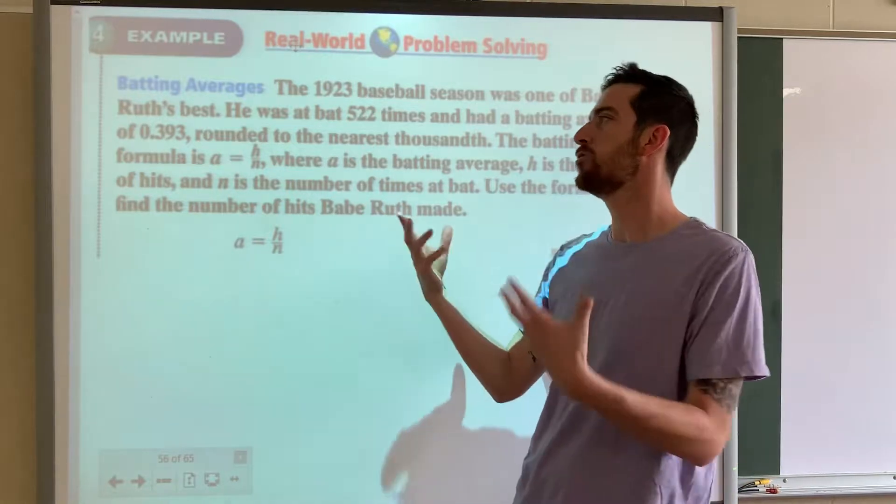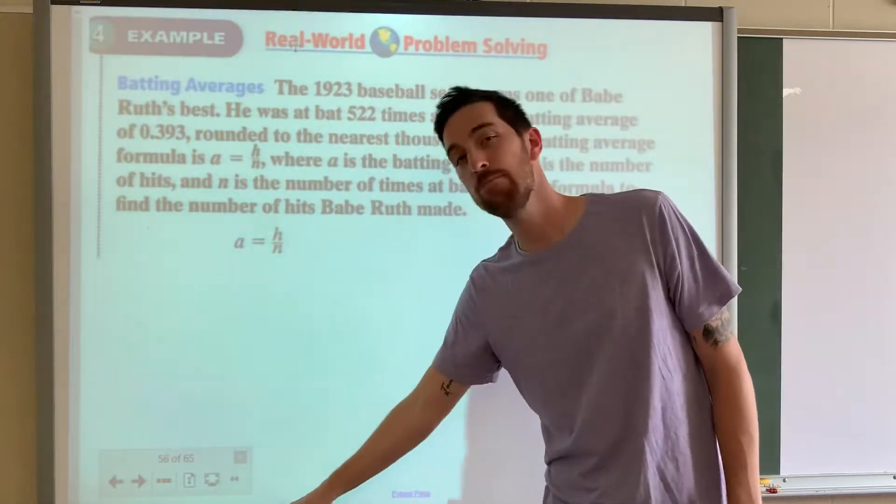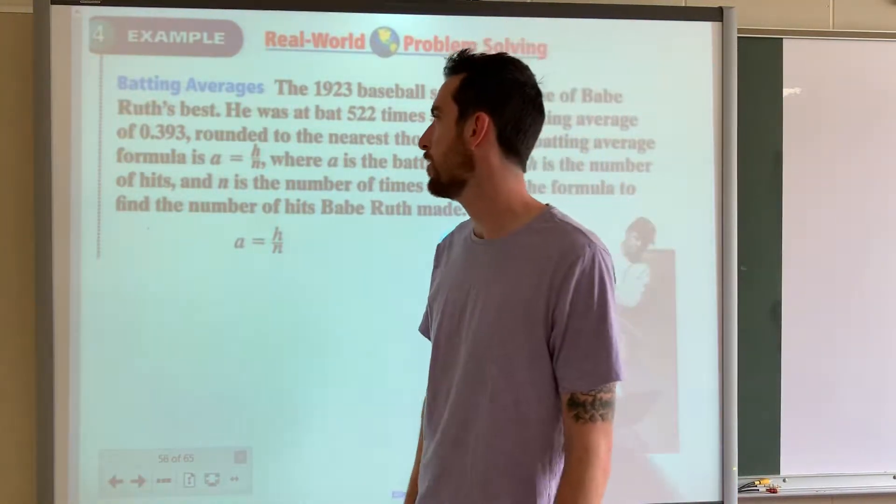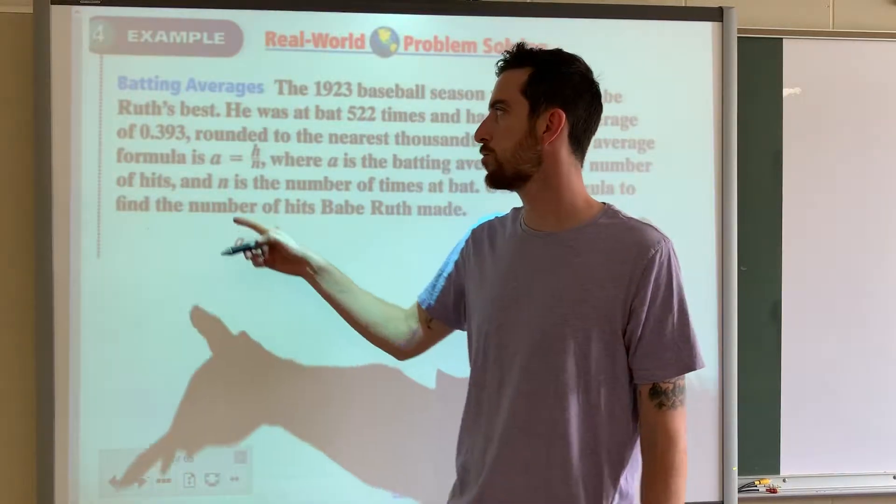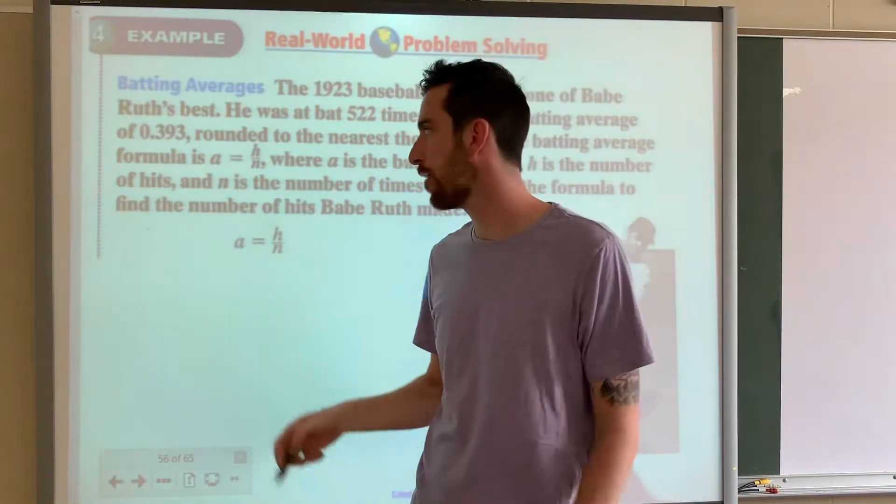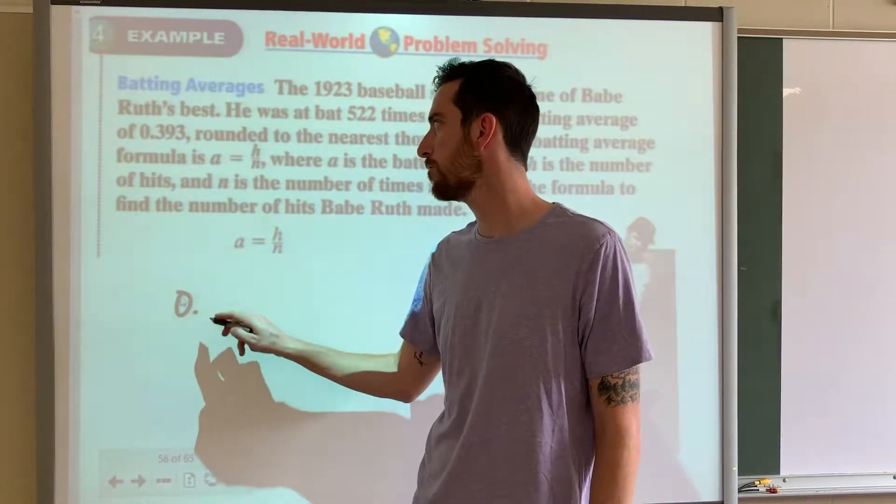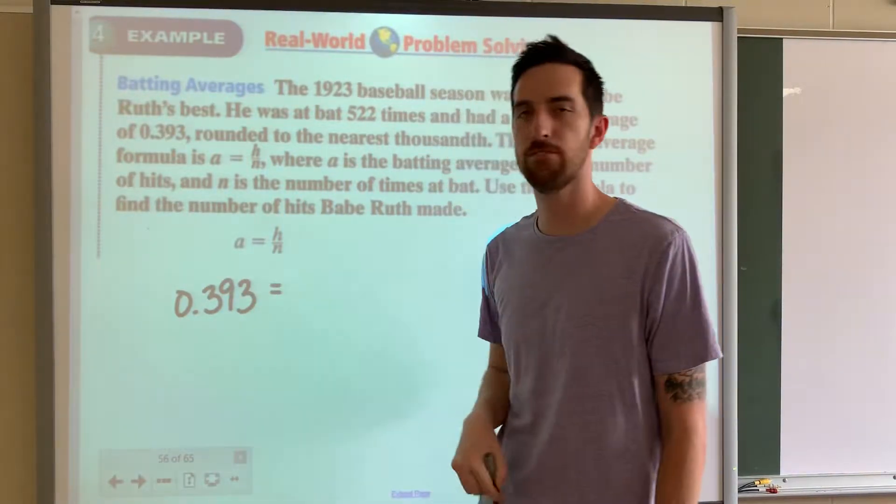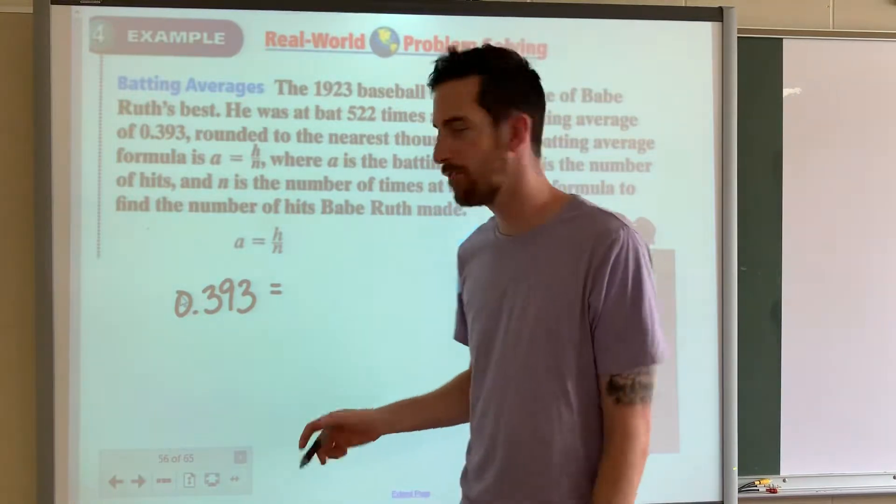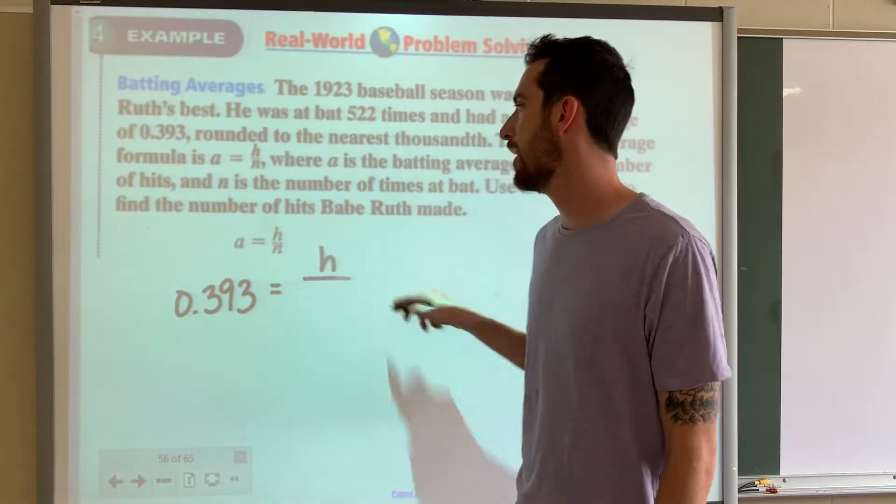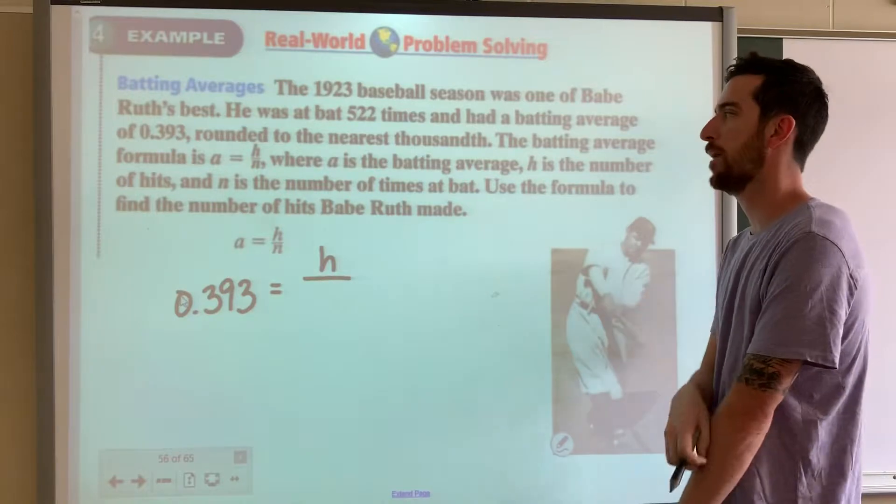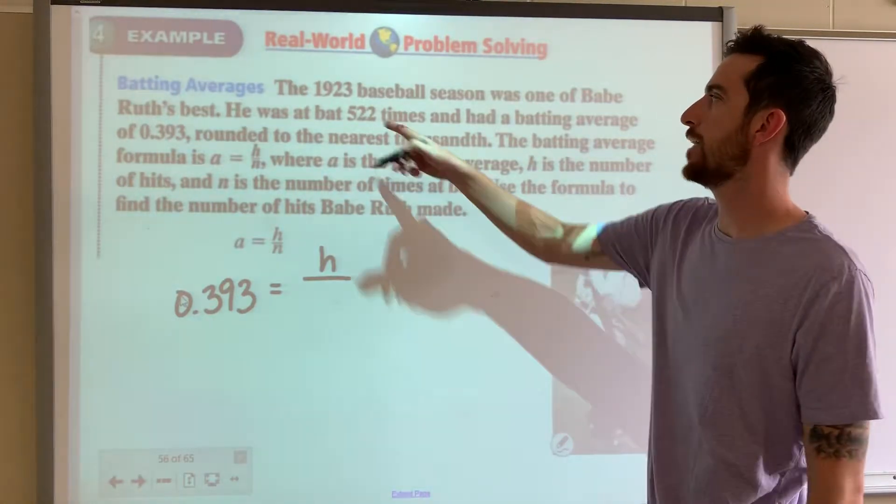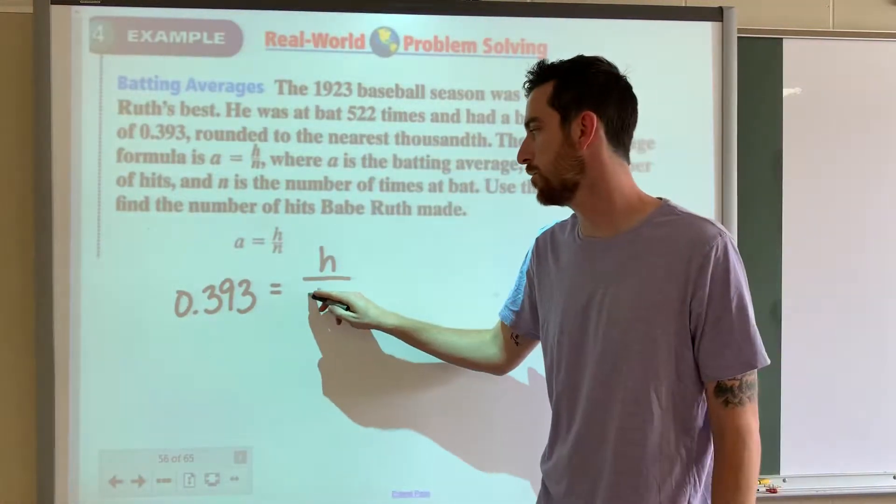So his average was 0.393. That's a pretty solid batting average. We'll plug that in for A because that's where the average goes. H represents the hits - we don't know that, that's what we're trying to find out. And N is the number of times at bat, which is 522 times.